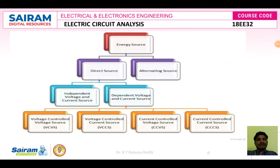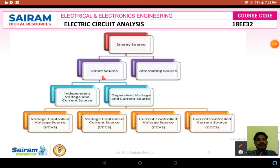Next: energy sources. Energy is equal to power multiplied by time. According to electrical engineering, energy can neither be created nor destroyed but can be transferred from one form to another. Energy sources are classified as two types: direct current sources and alternating current sources. Direct current sources are further classified as independent voltage and current sources, and dependent voltage and current sources.